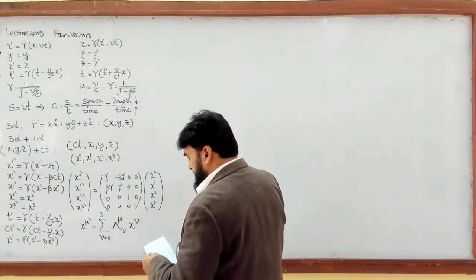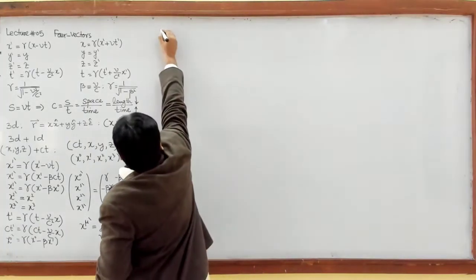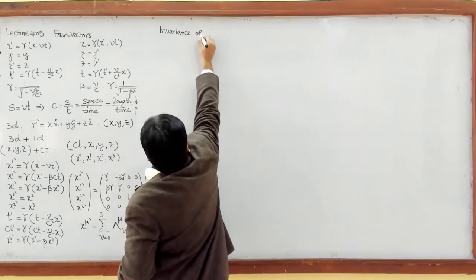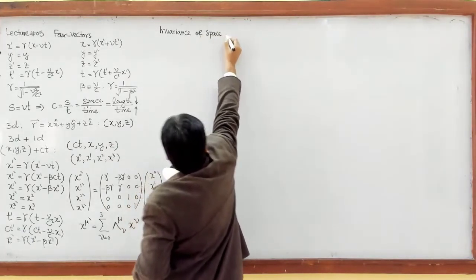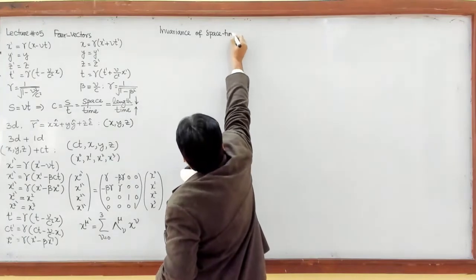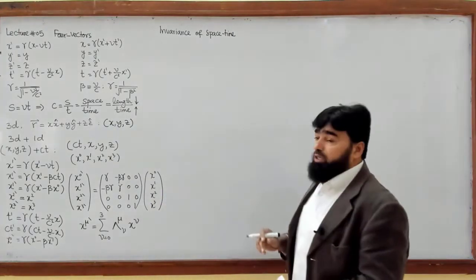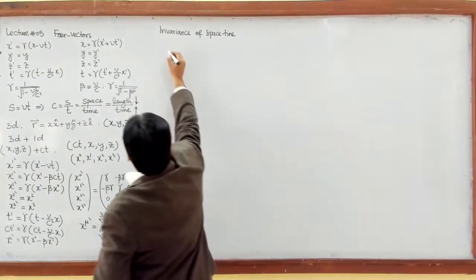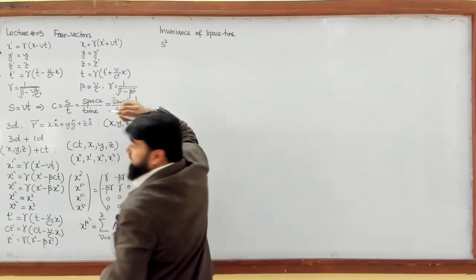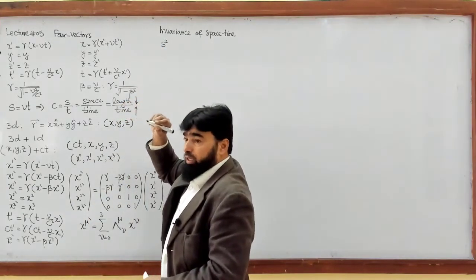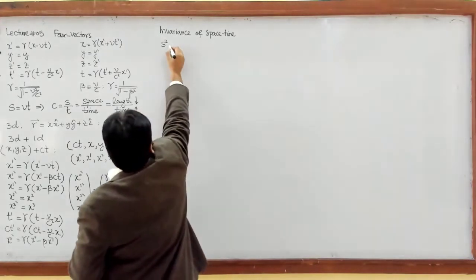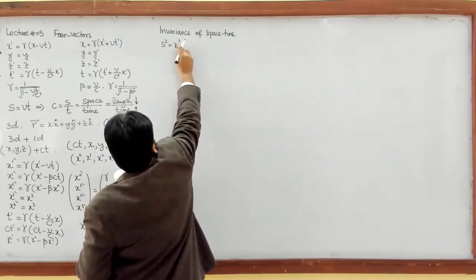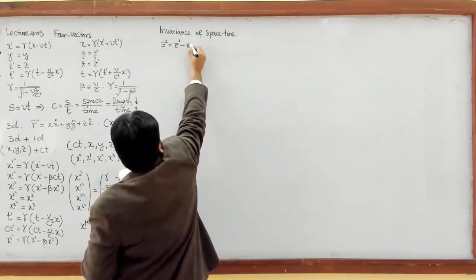Let me now discuss the invariance of space-time — space-time invariance under Lorentz transformation. We define a term s-squared; it is a distance term. Let us say this is equal to x₀ squared minus x₁ squared.